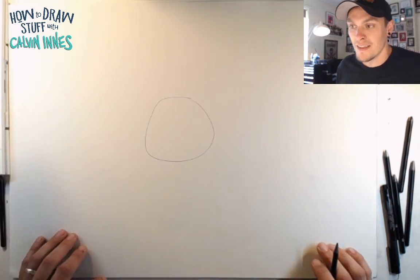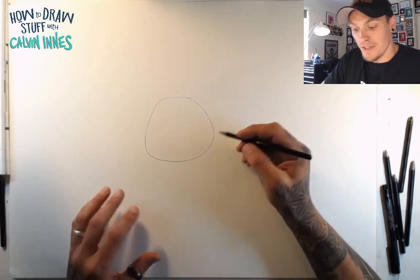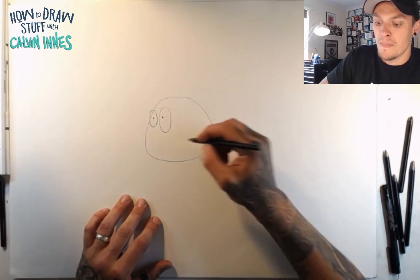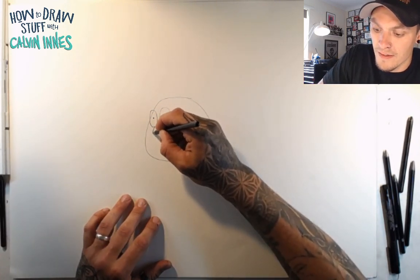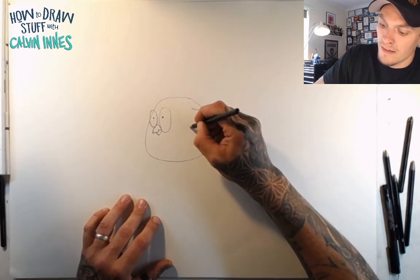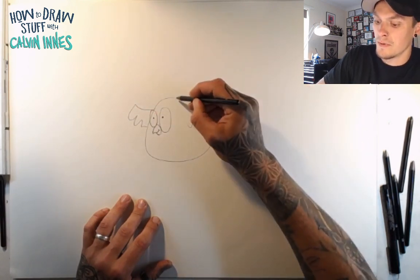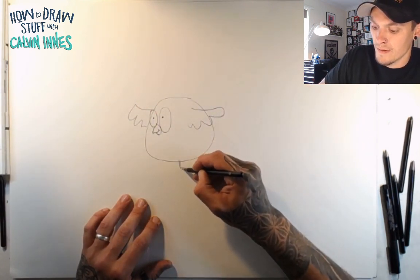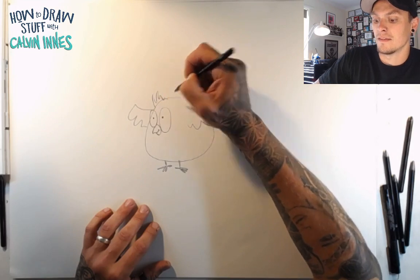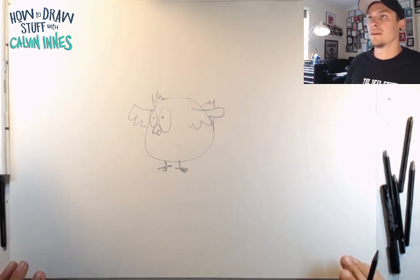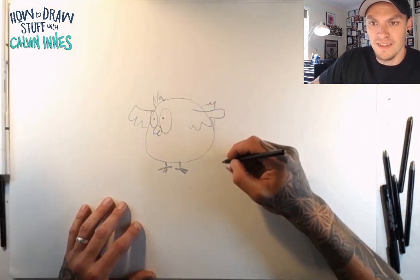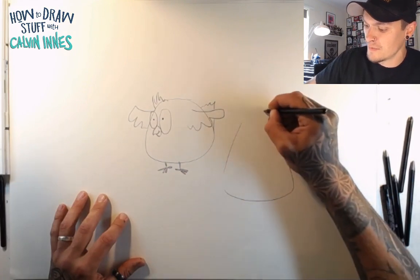This big blob we are going to turn into a bird. Let's put some eyes on there, a little beak, some really simple little wings, simpler legs, a little tuft of hair, and a little tail on the back. That's the first one — really nice and easy.